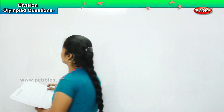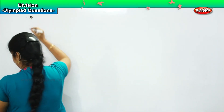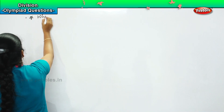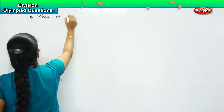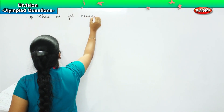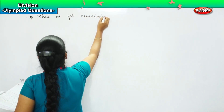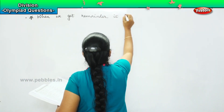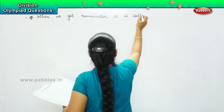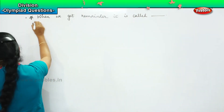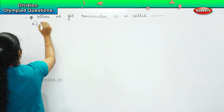Shall we go to the next question, children? Here is your next one. The next question says: when we get a remainder, it is called dash. Your options are: imperfect division,